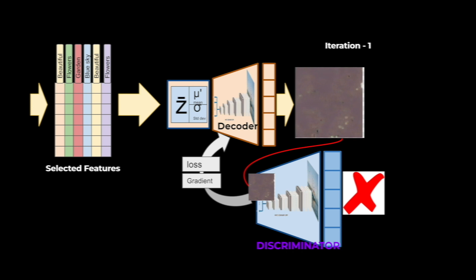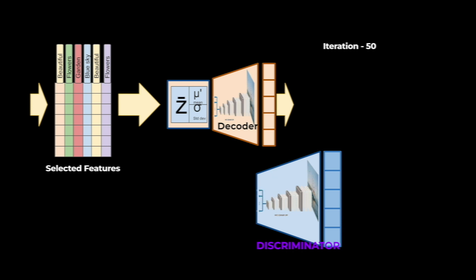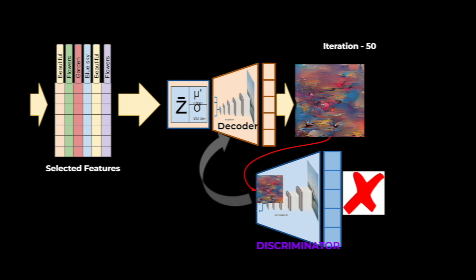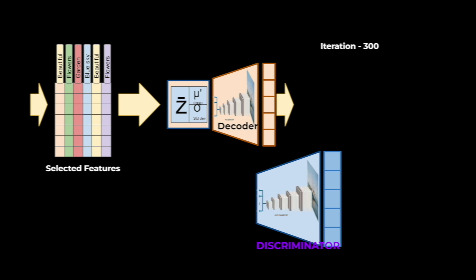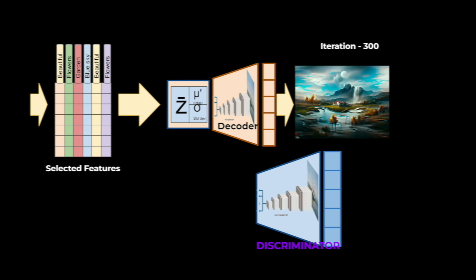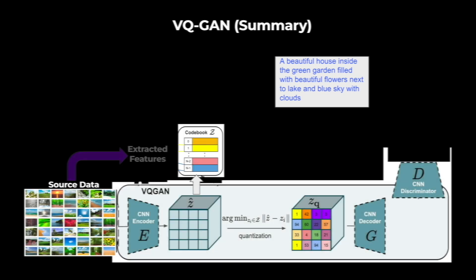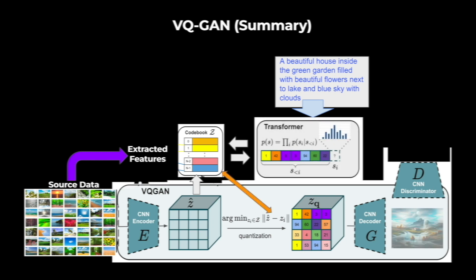After the first iteration, more iterations follow. For example, after 50 iterations an image is generated and sent to the discriminator, which flags it and sends loss and gradients back to the decoder. At around iteration 300, another image is generated based on the selected features and sent to the discriminator. The discriminator flags this as the correct final image. Using the text prompt, and by combining the codebook features with the transformer, we successfully generate the target image.